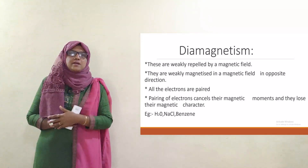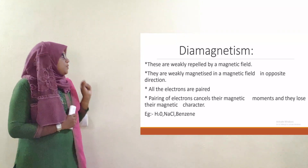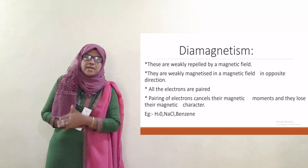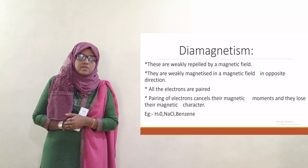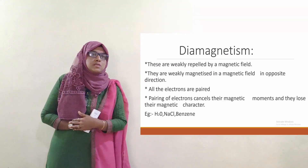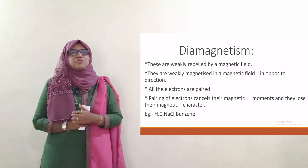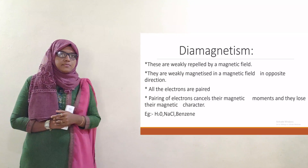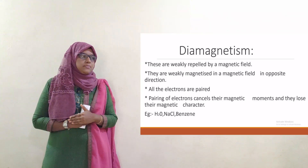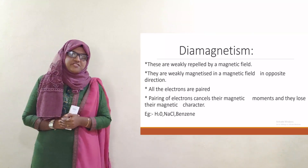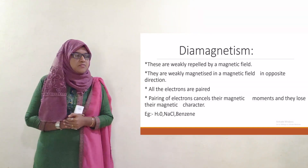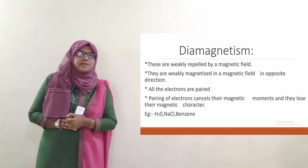They are weakly repelled by a magnetic field, and they are weakly magnetized in the opposite direction. The electrons are paired — pairing of electrons cancels their magnetic moment and they lose their magnetic character.